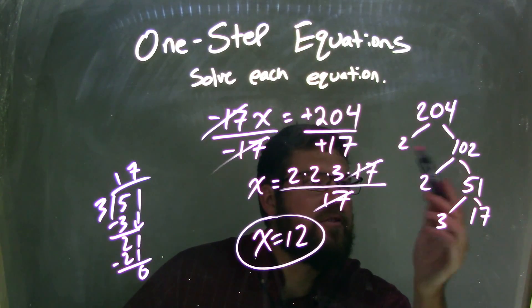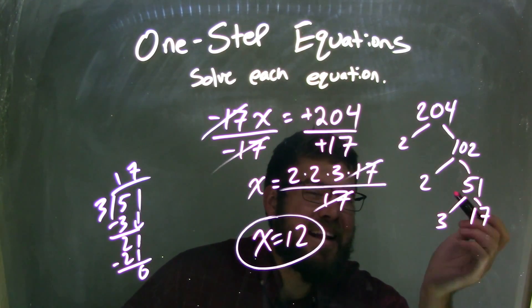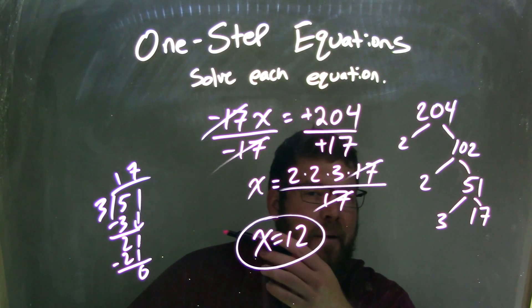I know two went into 204, so I have two and 102. Two goes into 102 because it's also even, so that was 51. And then I said, okay, 51, I knew that 3 went into 51, so I said I have to do that, I don't know how many times though.